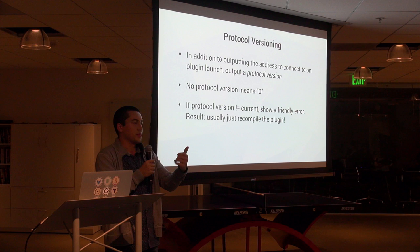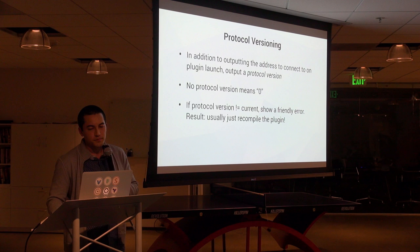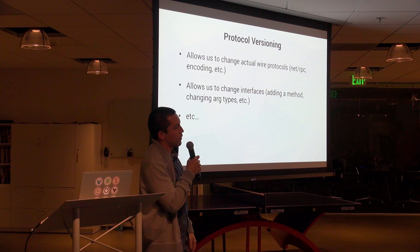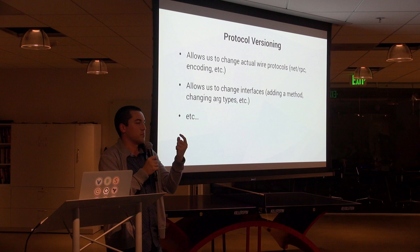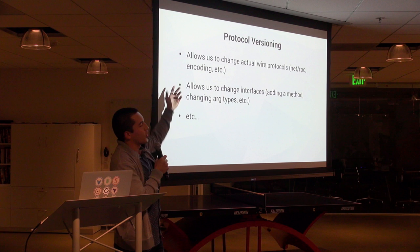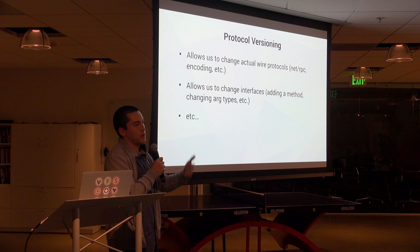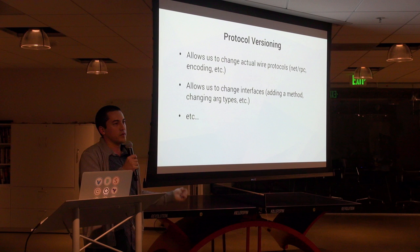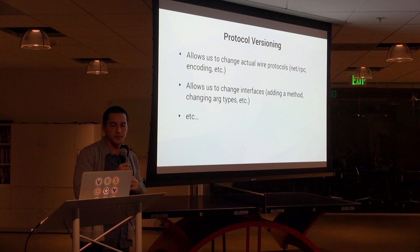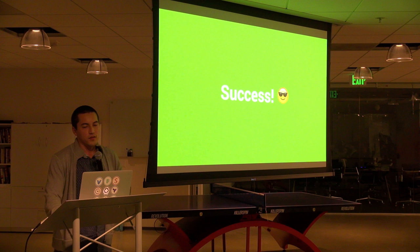Go makes it really easy with net.Dial — you just pass a protocol and an address and it figures out the rest. Then protocol versioning: in addition to outputting just the address, I now output a protocol number and then a pipe and then the address. If the protocol version doesn't match the version of the host process, I just show an error. To fix this it usually just meant you recompile the plugin — go get, download the master stuff with upgraded protocol info, recompile, and it just worked. The protocol version also allowed us to change the wire protocol or encoding — we actually did change from Gob to MessagePack at some point.